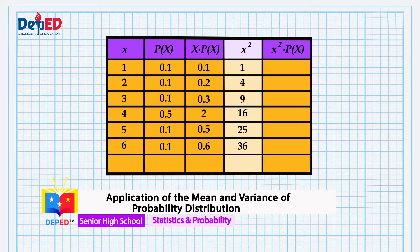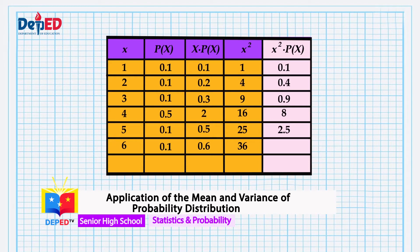Now we are on the last column labeled x squared times the probability. Let's get the product of each term. The product of 1/10 and 1 is 1/10. Of 1/10 and 4, it's 4/10. Of 1/10 and 9, it's 9/10. Of 5/10 and 16, it's 8. Of 1/10 and 25, it's 2.5. And of 1/10 and 36, it's 3.6. So the summation of the products is 15.5.